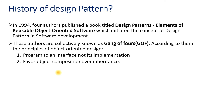Going back in history, in 1994 four authors published a book titled 'Design Patterns: Elements of Reusable Object-Oriented Software'. These books are mostly concentrated on the reusability of the code. These authors are collectively known as the Gang of Four, or GOF. According to them, the two principles of object-oriented design are: first, program to an interface and not to an implementation; and second, favor object composition over inheritance. These two principles are mostly followed to create any design pattern.